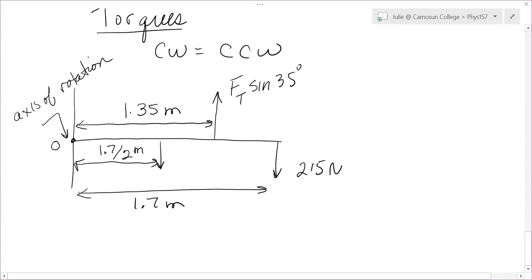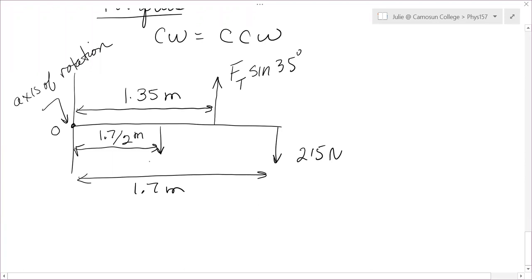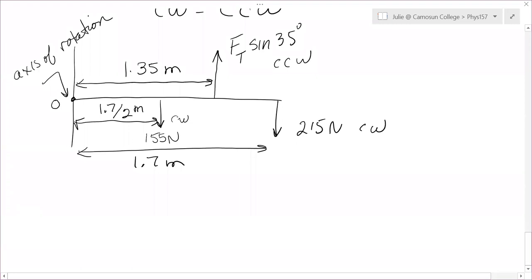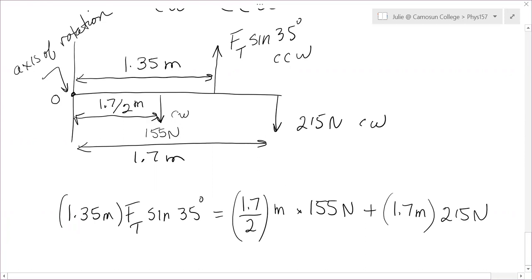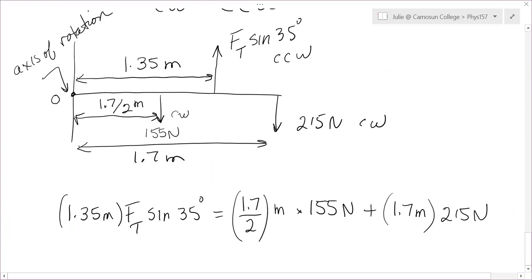So clockwise equals counterclockwise. Again, clockwise are the weight of the beam, the 155. That's a clockwise. So I'm going to mark that clockwise. And this is a clockwise. Tension is a counterclockwise. So lever arm times force, lever arm times force, lever arm times force. 1.35 meters times ft sin 35 equals lever arm 1.7 over 2 times force, those are meters times 155, plus lever arm times 155 plus lever arm 1.7 times 215 newtons. You run through that calculation. You get that the force of tension is 642 newtons.